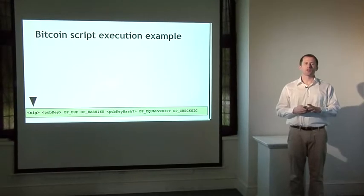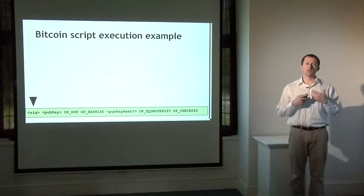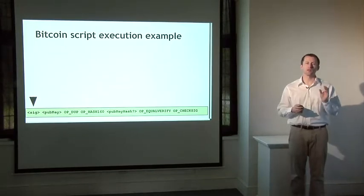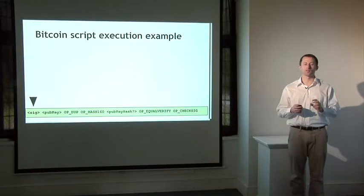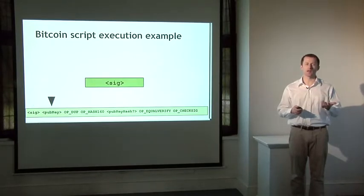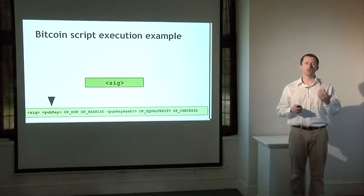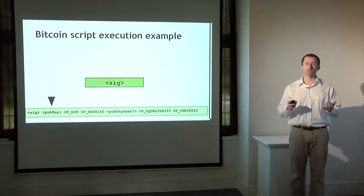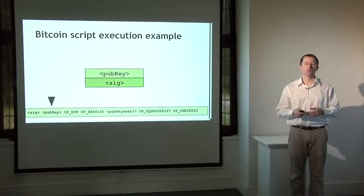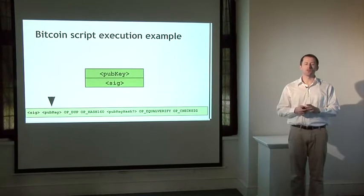So the first two instructions in this script are simply data instructions, like I said, and these are the signature and the public key used to generate that signature. And these were specified by the recipient in that script-sig component or the input script. So executing data instructions is easy in a stack-based language. If you see data, you just push it onto the stack. And that's the only interaction with memory that you have in a stack-based programming language. There's no variables, there's only a stack. So the only thing you can do to write data to memory is to push it onto the stack.